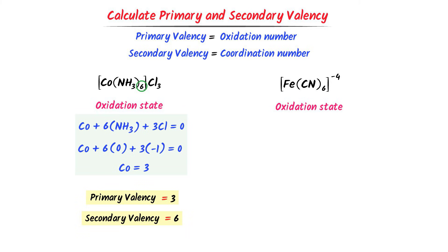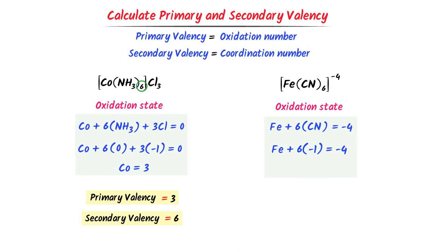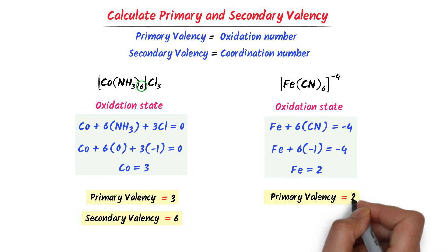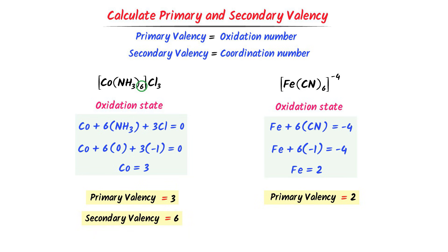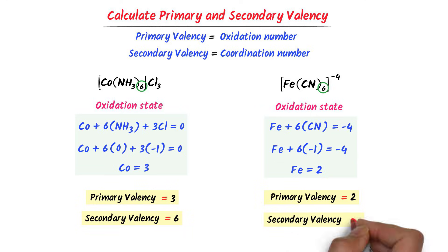Now I find the oxidation number of iron in [Fe(CN)₆]⁴⁻. Iron + 6×(CN⁻) = −4. Since each cyanide ion has a charge of −1: Fe + 6×(−1) = −4, giving iron = +2. Thus the primary valency of iron is +2. Since the metal is bonded to six cyanide ligands, the coordination number is 6, so the secondary valency is 6.